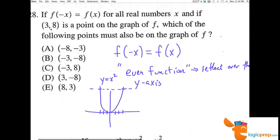So if (3, 8) is one point here, then we have to have (-3, 8), making C the correct answer.